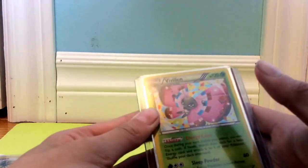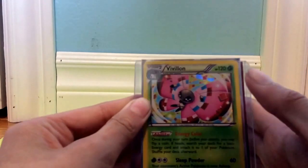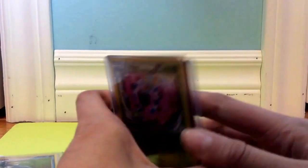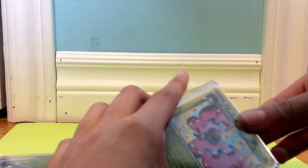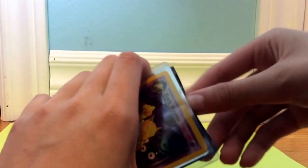And this is a Vaporeon. Let's show you guys what sleeves they're in. I believe they're in the Ancient Origins 3-box sleeves. Oh yeah, yep.